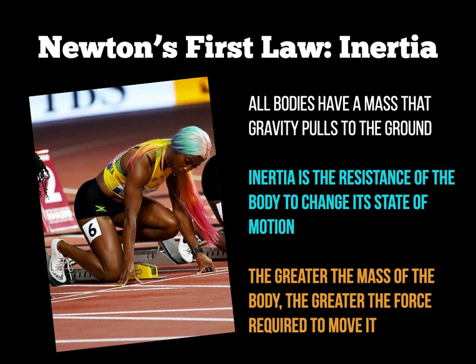If we look at a 100-metre sprinter: as the athlete is stationary in the blocks before the starting gun goes off, this is a good example of inertia. The athlete's body is stationary and doesn't move until another force acts upon it — for example, the athlete pushing against the blocks. The athlete remains stationary in the blocks until another force is applied. Another example: if you place a tennis ball flat in the palm of your hand, the ball will not move until you apply a force to it.